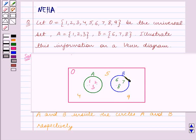So this is the Venn diagram for this question, where the sets A and B are represented by the circles A and B respectively, and the universal set O is represented by this rectangle.